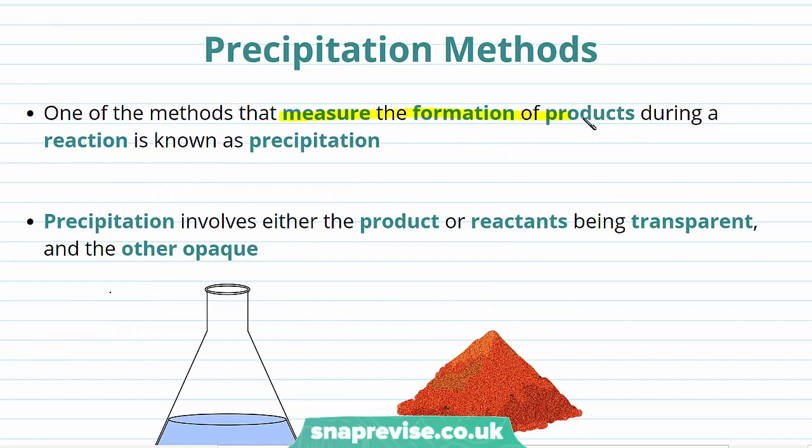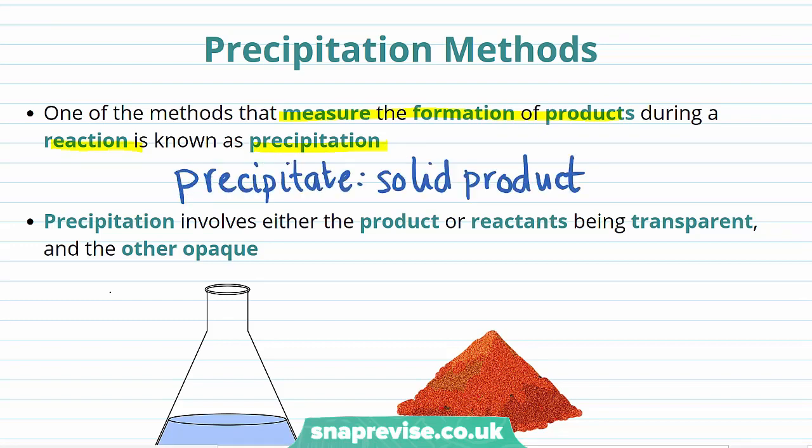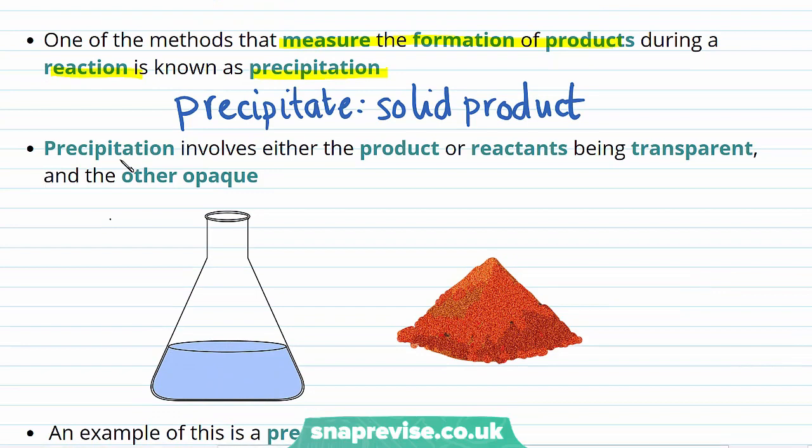The first method that is used to measure the formation of products during a reaction is known as precipitation, where a precipitate is just a solid product which is formed from a liquid or solution during a reaction. The precipitation method relies on either the products or reactants being transparent, and the other one being opaque.